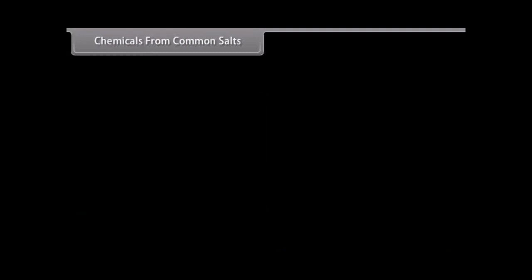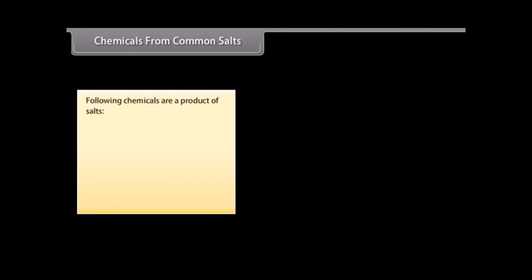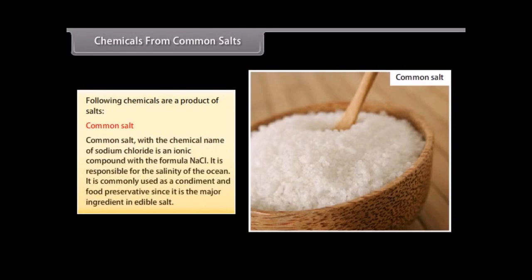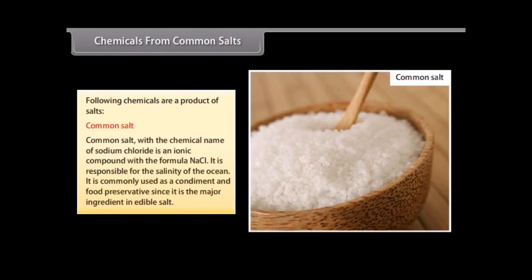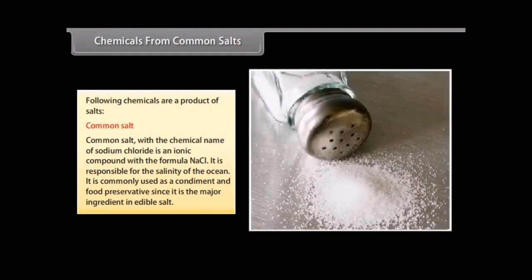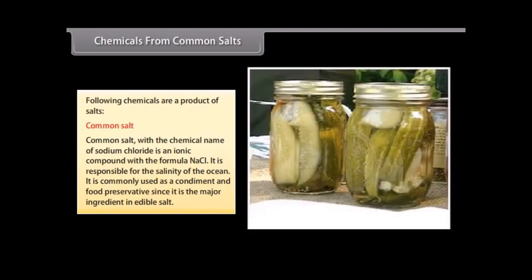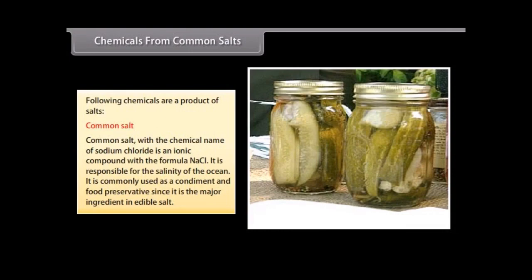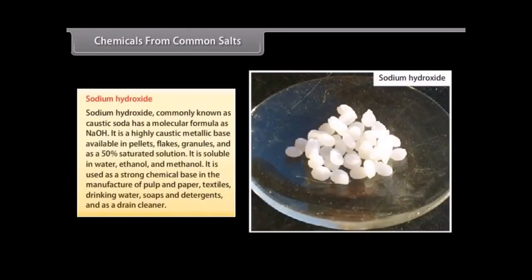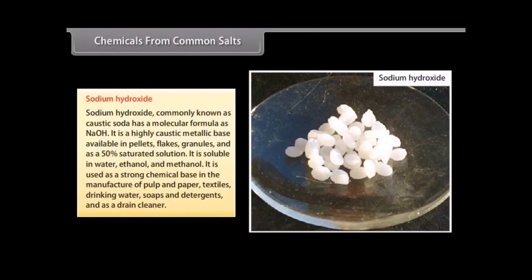Chemicals from common salts. The following are some of the chemicals produced from salts. Common salt: Common salt with the chemical name of sodium chloride is an ionic compound with the formula NaCl. It is responsible for the salinity of the ocean. It is commonly used as a condiment and food preservative since it is the major ingredient in edible salt.